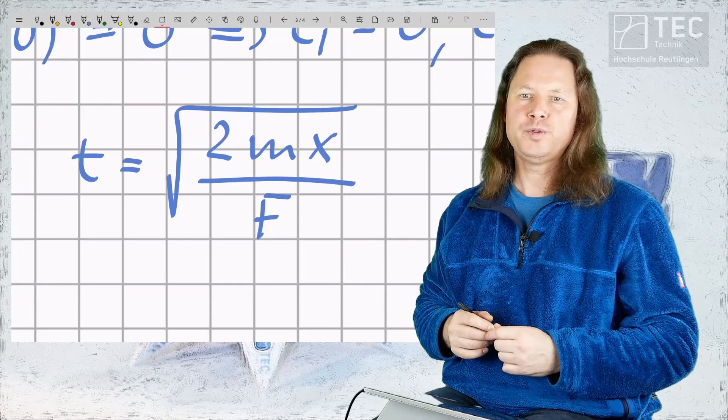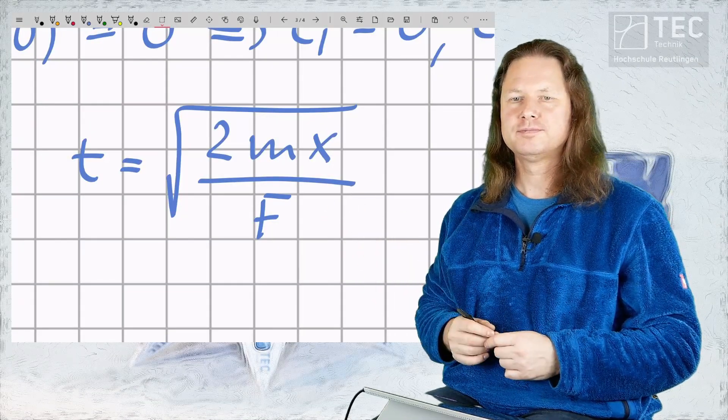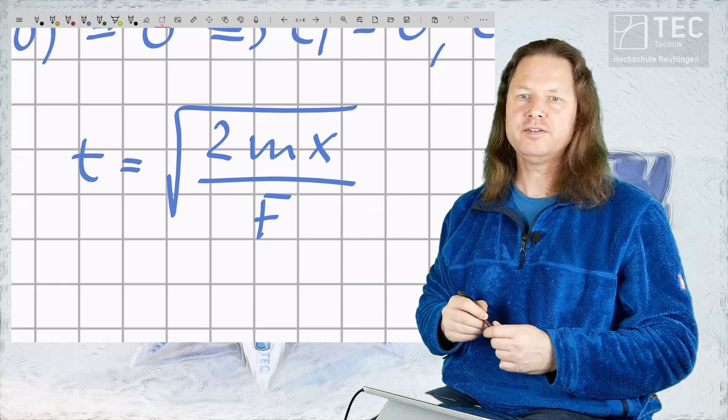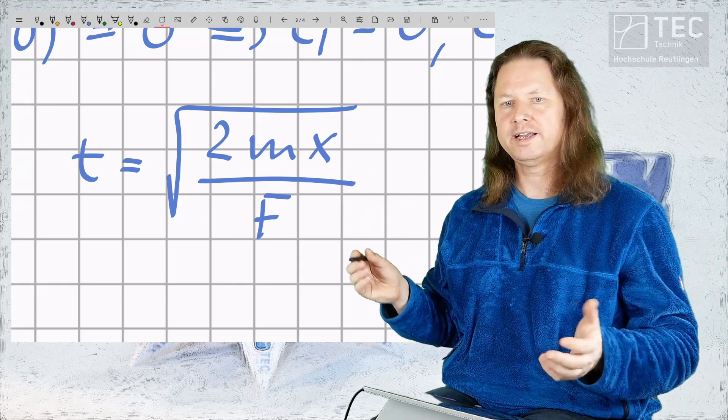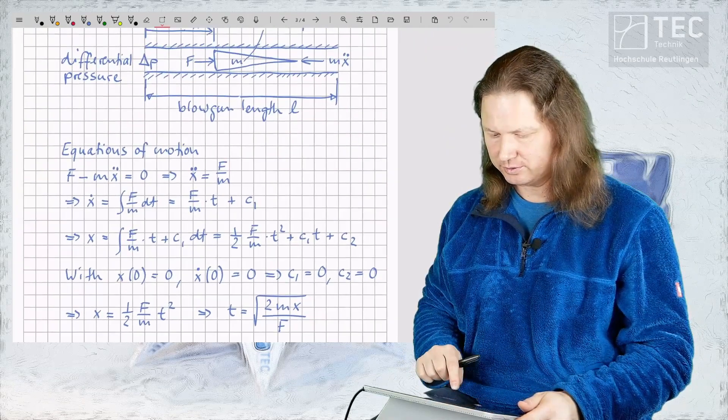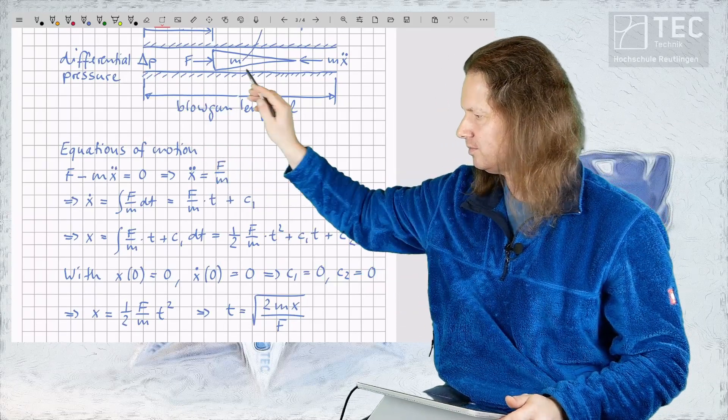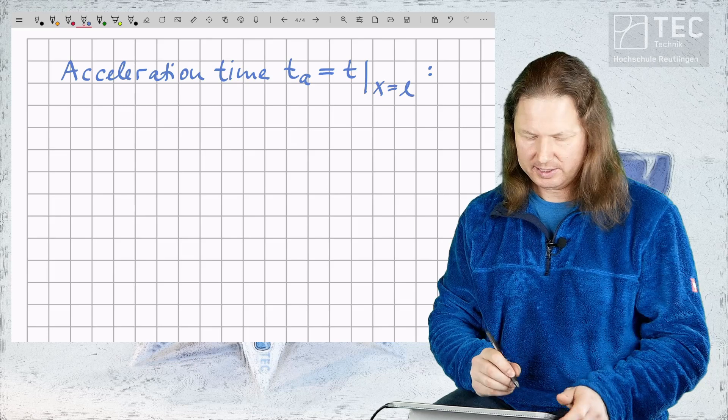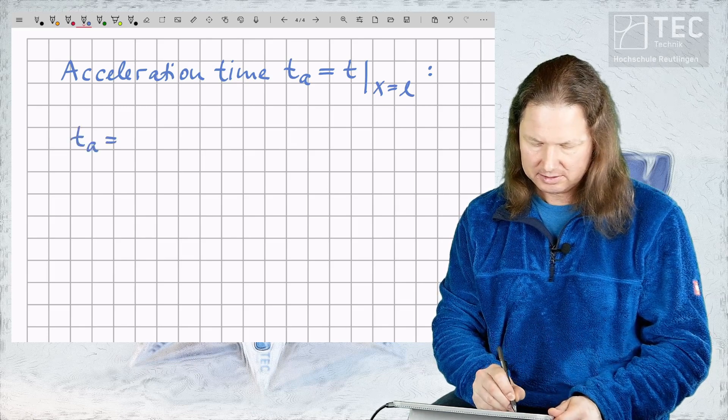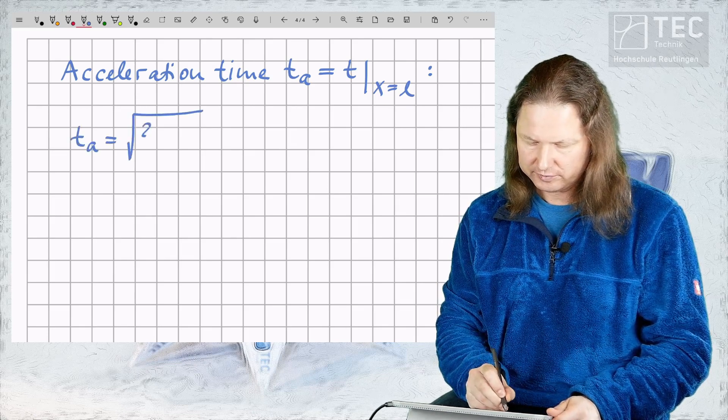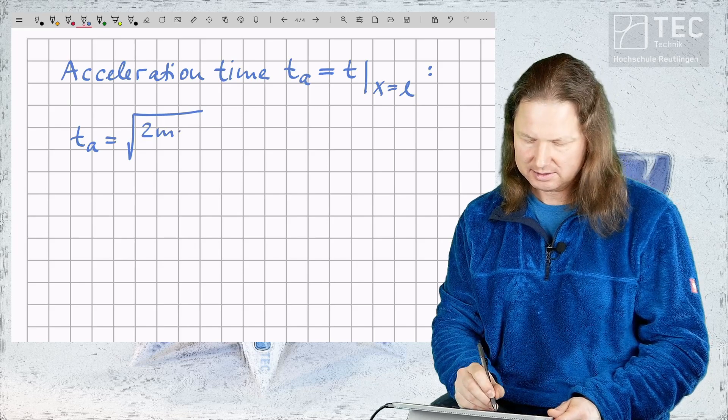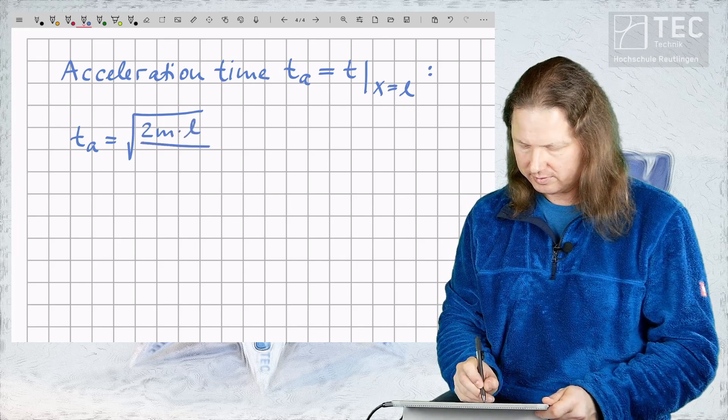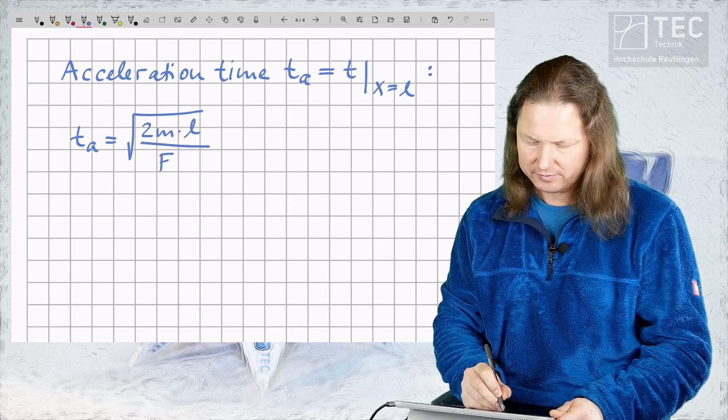Now what can we do with the expression we've just derived? By setting x to the length of the blowgun L we can calculate the time it takes the dart to travel from one end to the other. For the acceleration time TA we have TA is equal to the square root of twice the mass of the dart times the length of the blowgun divided by the accelerating force F.